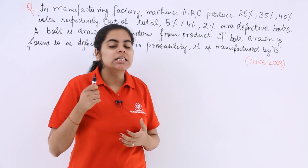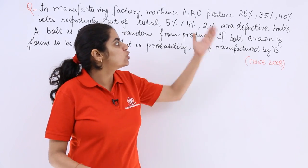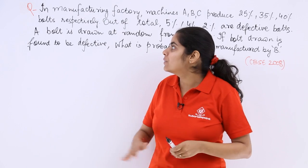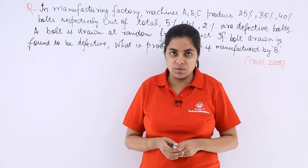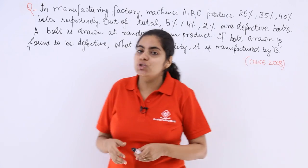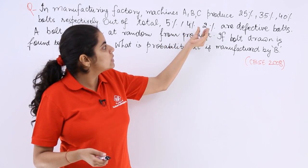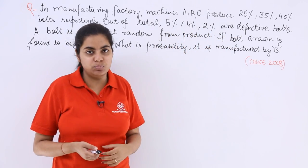Machines A, B, C produce 25%, 35%, 40% of bolts respectively. So it's a bolt manufacturing factory. Now out of the total, 5%, 4%, 2% are defective bolts.